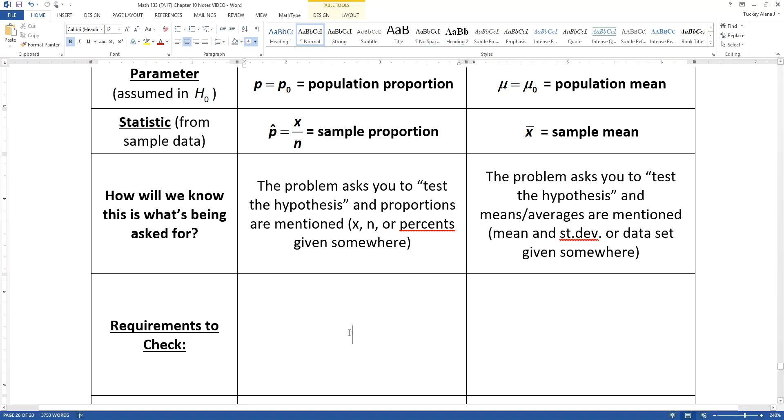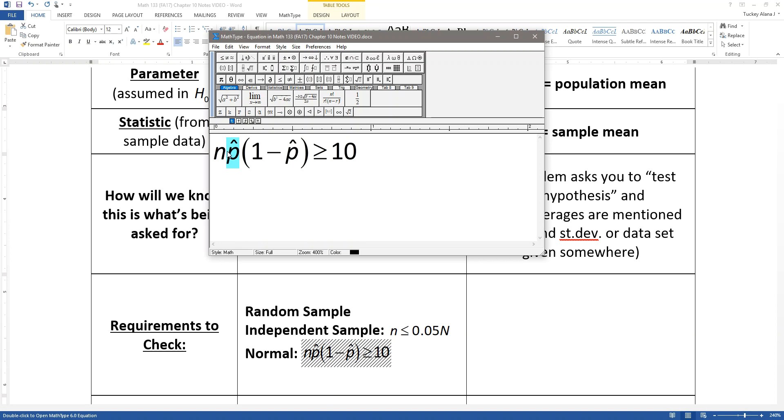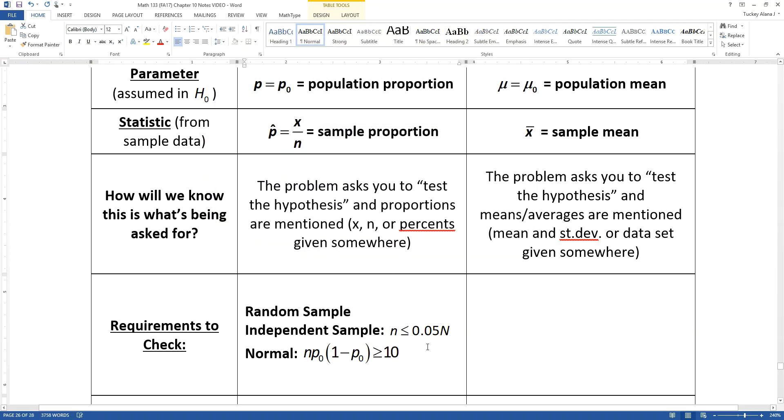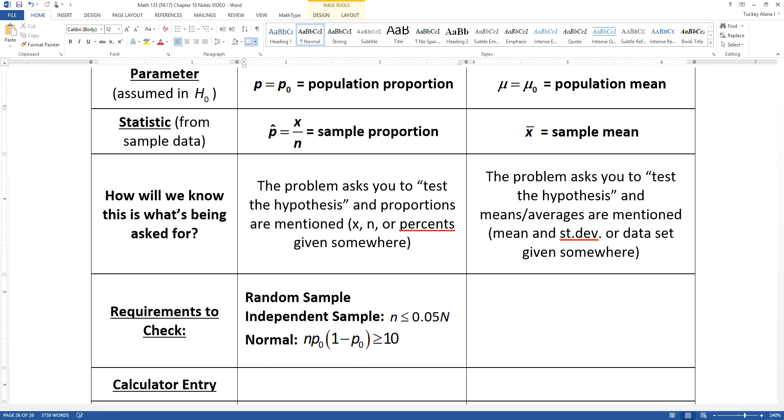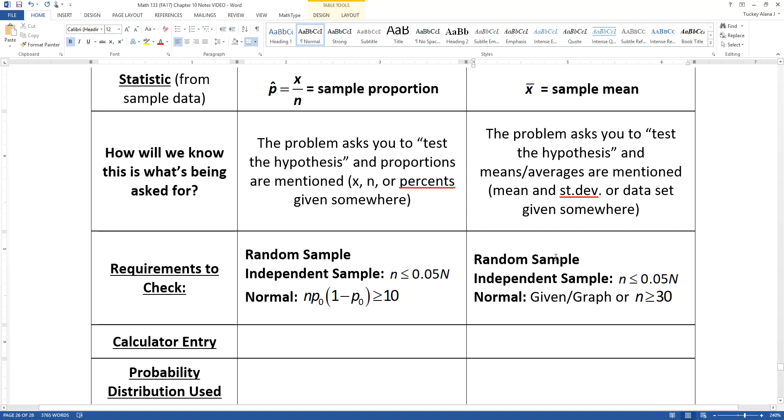What requirements do you have to check? For proportions, it's very similar to the ones you had for a confidence interval. It's just that instead of using p-hat to check normality, we would use p0, because we actually have a hypothesized population mean. Don't forget the independent sample part. If you're sampling with replacement, you don't have to worry about it at all. But if you're sampling without replacement, then you want your sample size to be less than 5% of your population size. Or you can kind of wave your hand at it like a magician.